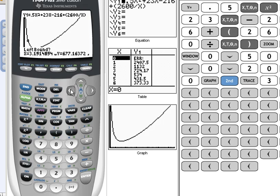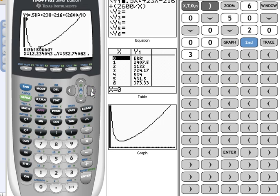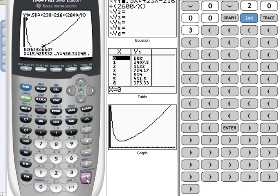And then we're going to move over to the right side and hit enter. And then for guess, we always hit enter. So this is telling us now that we have a minimum.